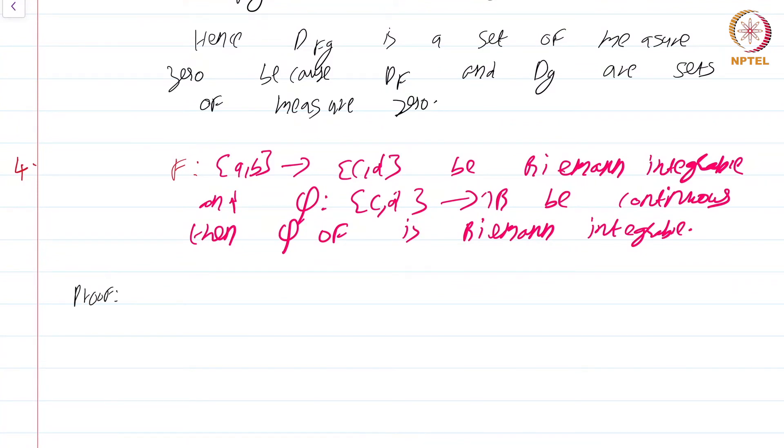Again the corollary looks a bit complicated, but the proof is very easy. Proof: Let D_f be the set of discontinuities of f. Then the set of discontinuities of phi composed with f is a subset of D_f. Why is this true? Again because the composition of two functions will be continuous at a point if f is continuous at that point and phi is continuous at f of that point.